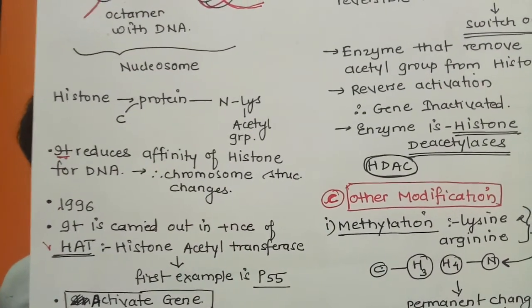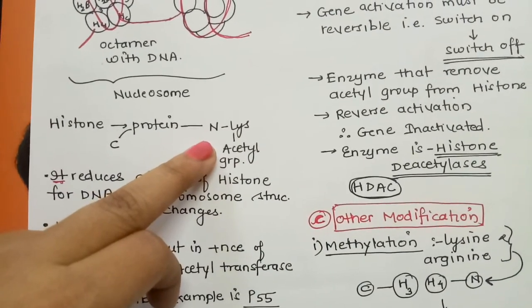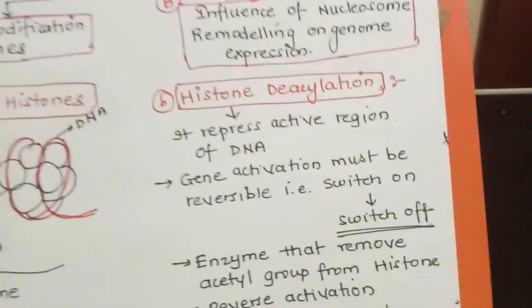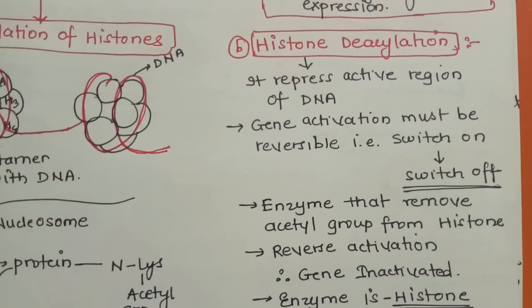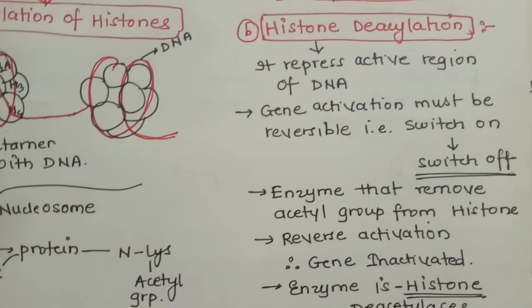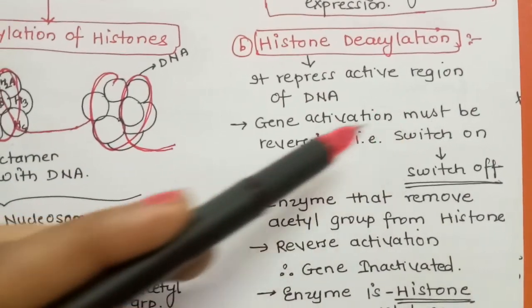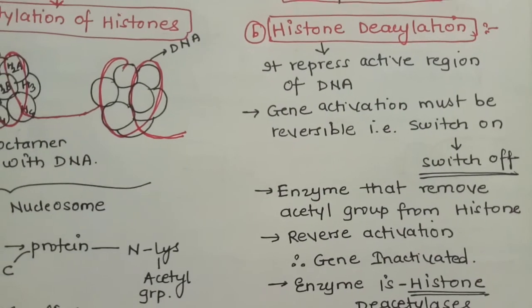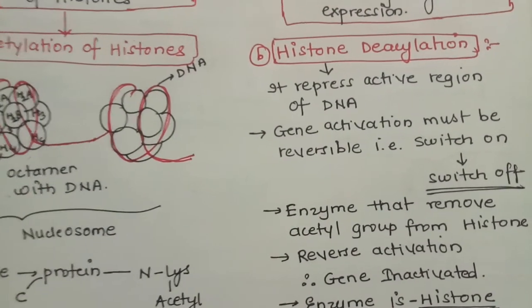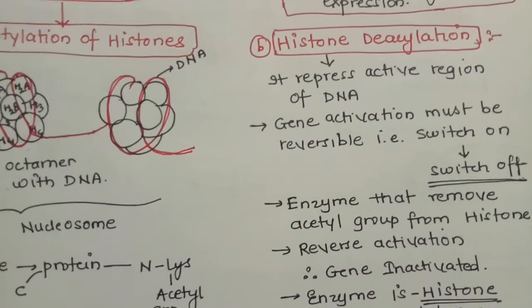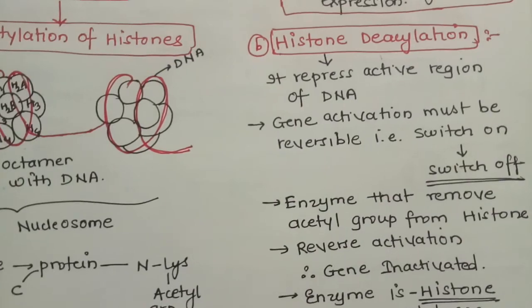Once the gene has been activated, transcription occurred, translation occurred, proteins were made - now I need to make that DNA inactive. For that, we will do a second modification. First we added an acetyl group - that process is called acetylation. The second modification is histone deacetylation. Just as the acetyl group was added, in a reversible manner we will remove the acetyl group. This re-packs the active region of DNA, meaning to make the DNA inactive - gene activation must be reversible.